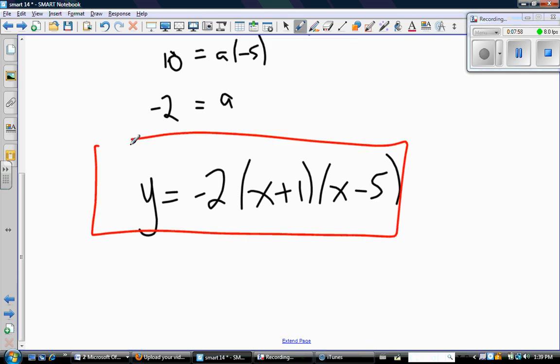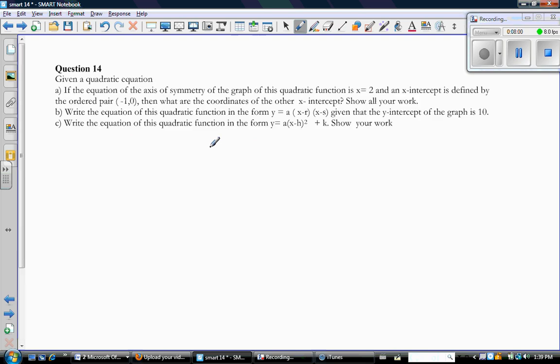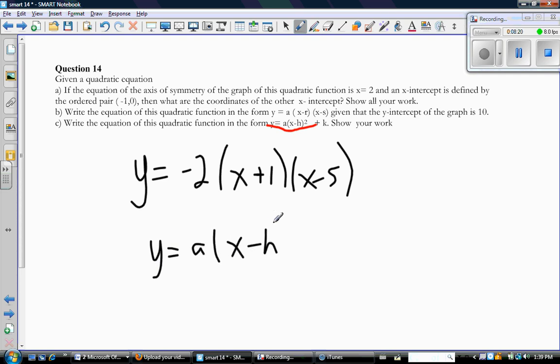Excellent. So let's look at c. C says write the equation of this quadratic in vertex form and show your work. Okay, so again, this is the quadratic that we have, y = -2(x + 1)(x - 5). And we want to write it in vertex form.